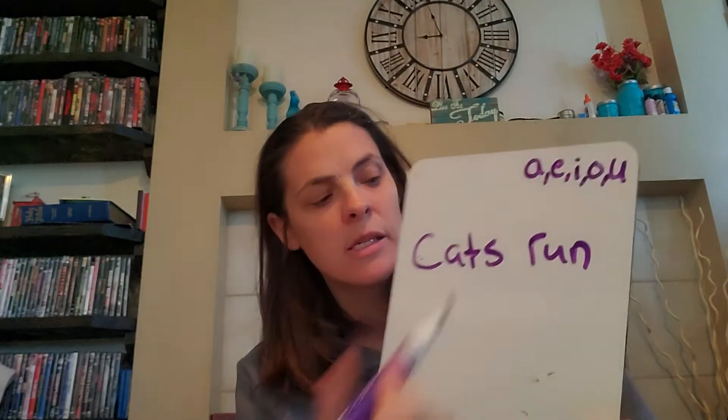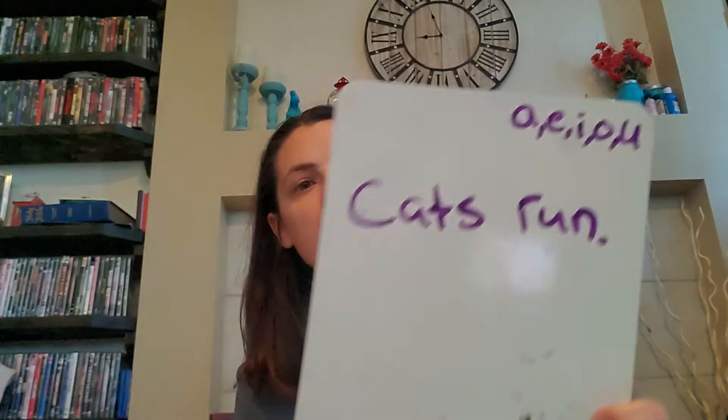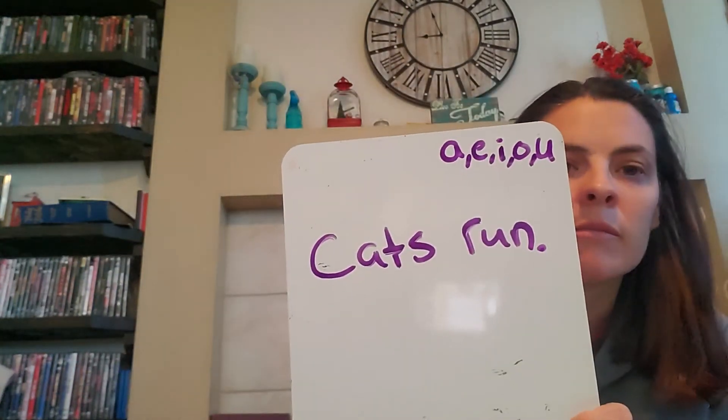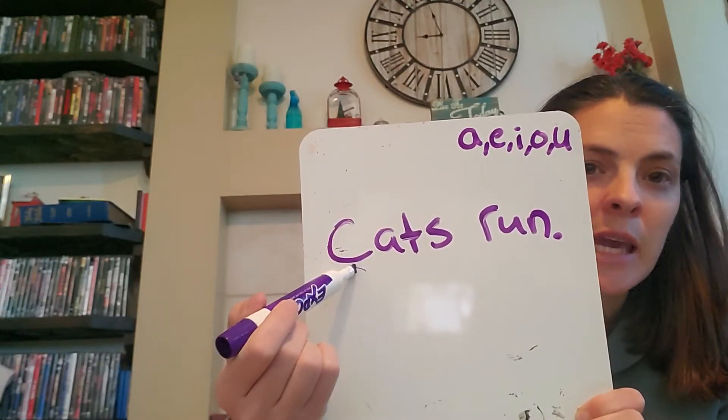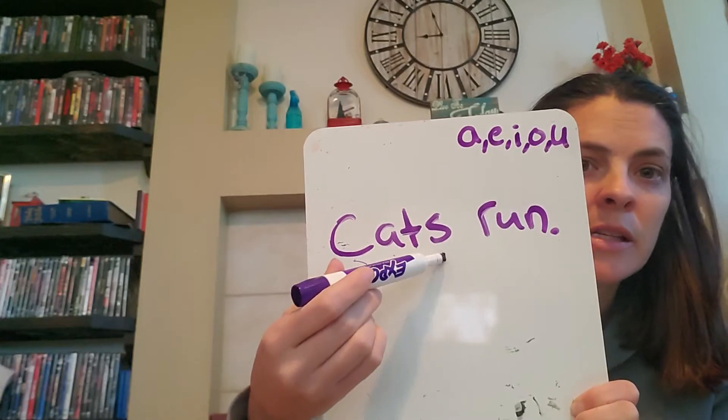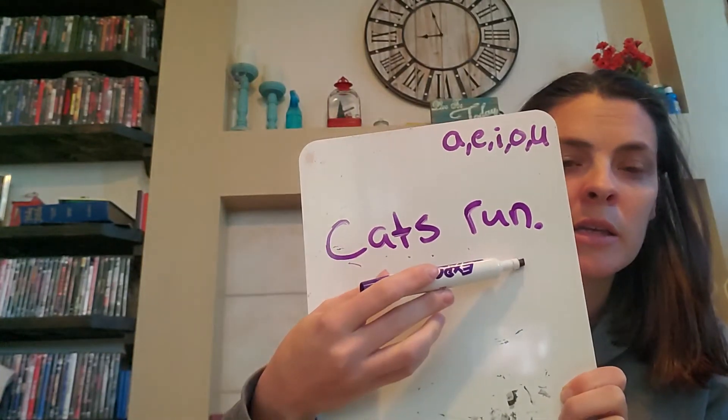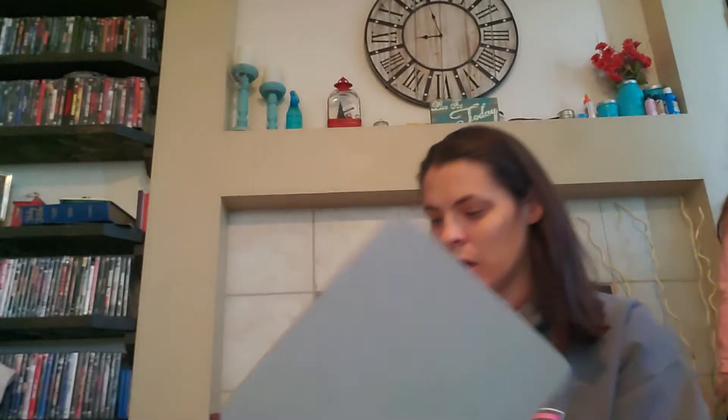Let's sound it out: C-A-T-S. Good job. What's the second word that you heard? Run. Good job. Sound that one out with me: R-U-N. Good job. So we have that, and that makes a sentence. So here we add our little dot — as close to our little N as we could. Now we have our complete sentence: capital C, C-A-T-S R-U-N, period.